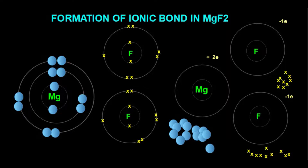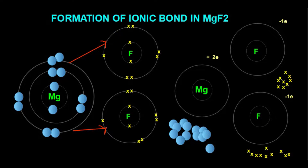During the formation of the bond, magnesium loses 2 electrons from its valence shell. One electron is picked up by one fluorine atom and another electron is picked up by the second fluorine atom. So the first electron of magnesium is picked by the first fluorine atom, and the second electron is picked by the second fluorine atom.